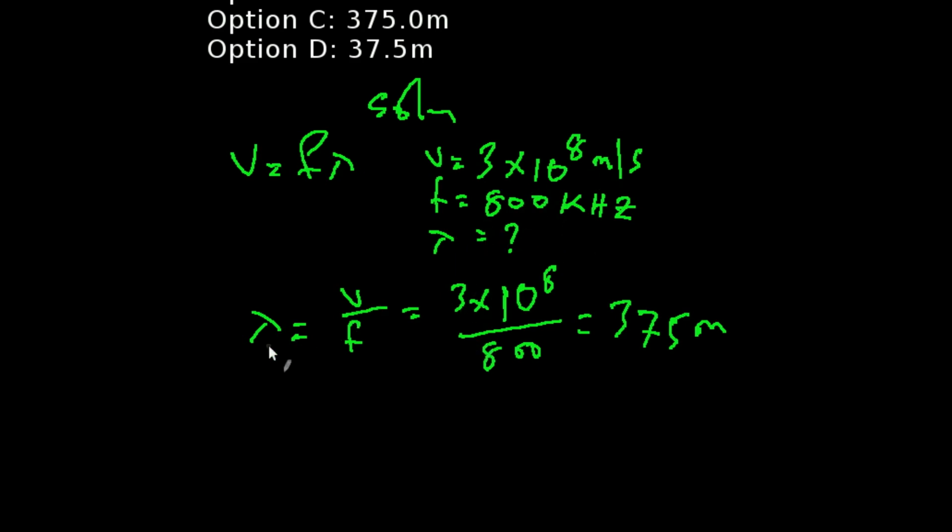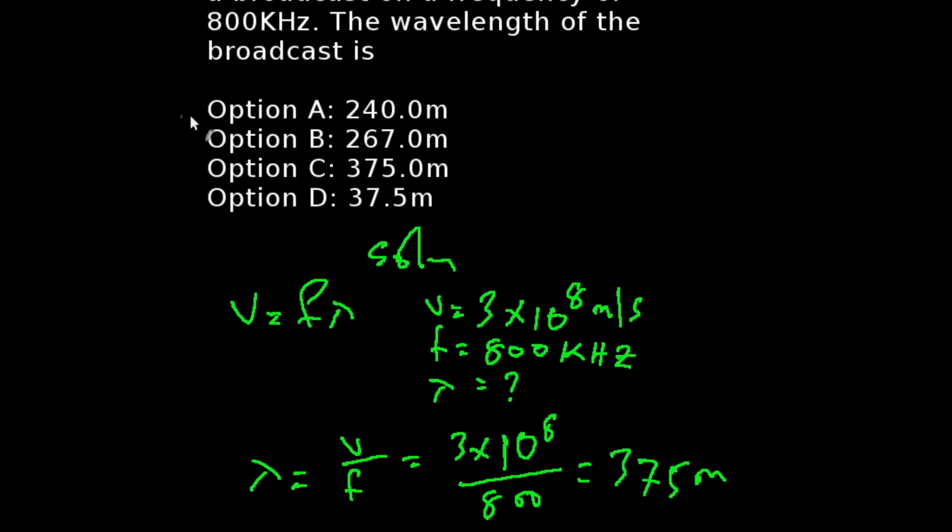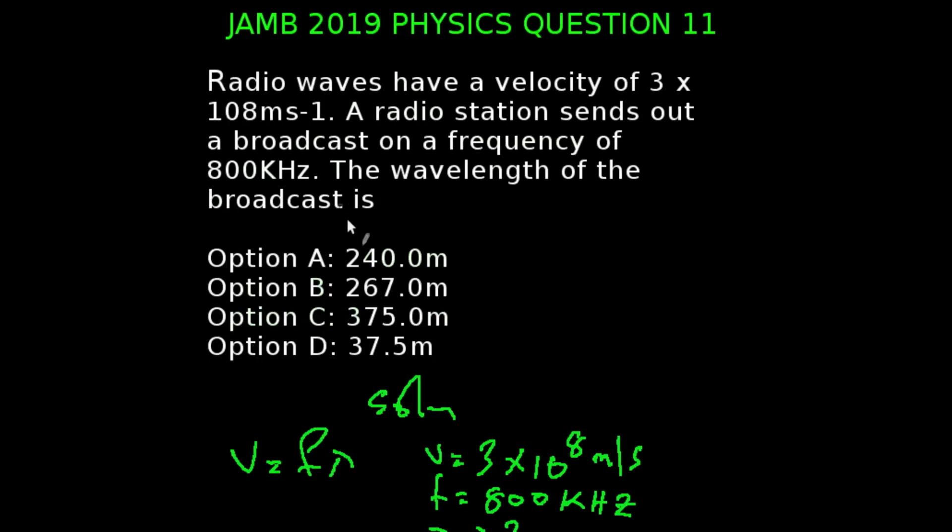So when we make our wavelength the subject of the formula, we're going to be having V over F, that is velocity over frequency. That's going to give us 375 meters. So our wavelength is 375 meters and that corresponds to option C.